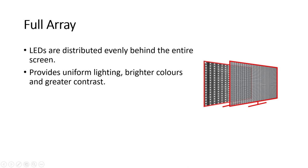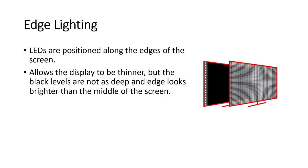In edge lighting, the LEDs are placed along the edges of the screen — either all around the periphery or on two sides or just at the bottom — and light up the whole screen from there. This type of backlighting allows the display to be thinner, but the downsides are that black levels are not as deep and lighting is not uniform. The edges will appear brighter than the middle area since the actual light sources are along the edges, and wherever the image should be completely black it will not be exactly black.